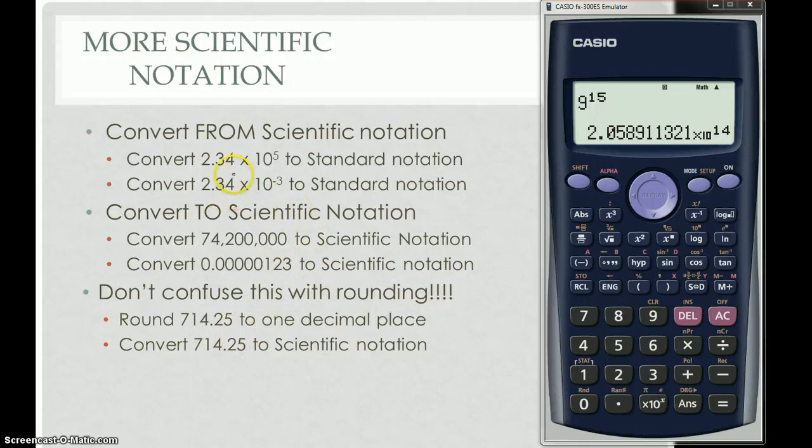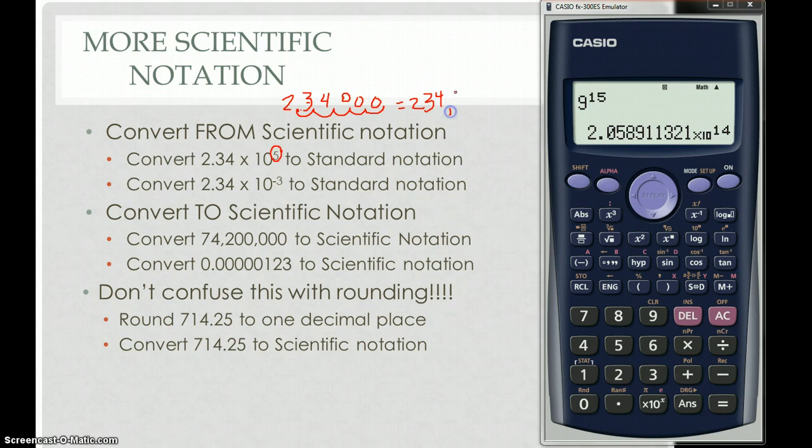Let's practice. Let's convert from scientific notation to standard notation. So if I want to convert the first one, I'll write it up here. I write down 2.34, and I want to turn it into standard notation, so I look at that exponent on the 10, and it's a positive 5. So I'm going to move my decimal point 5 places to the right. 1, 2, 3, 4, 5. And I have to put zeros anywhere I have an empty loop. I have three empty loops, so it gets three zeros. So 2.34 times 10 to the 5th is the same as 234,000.